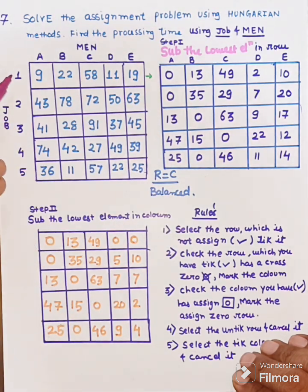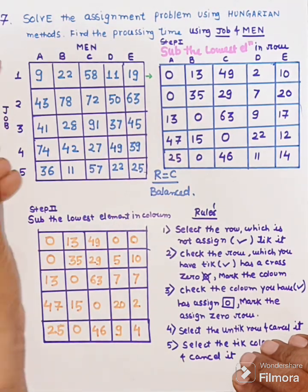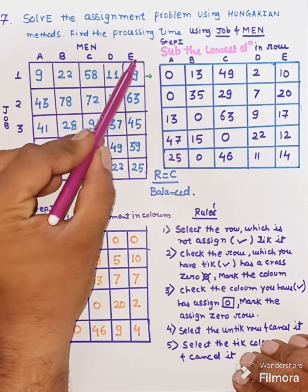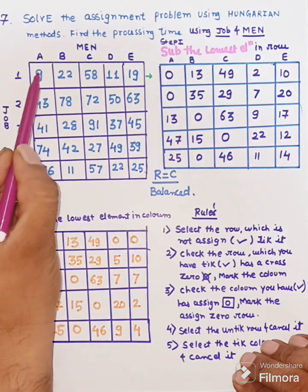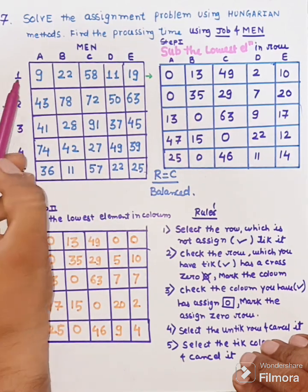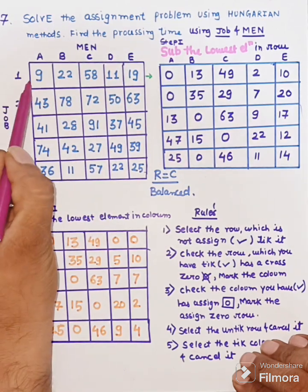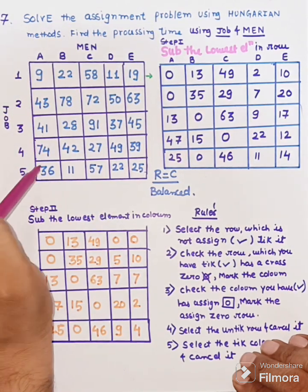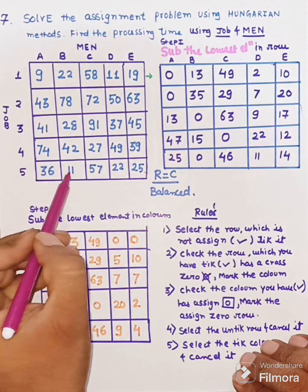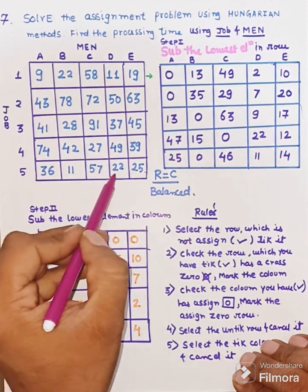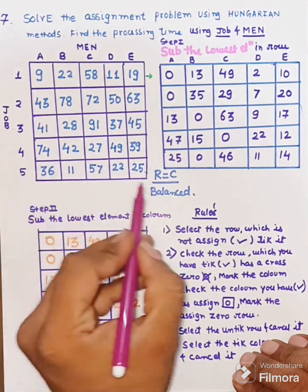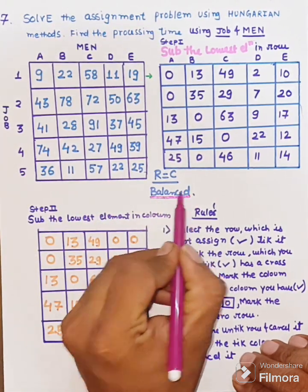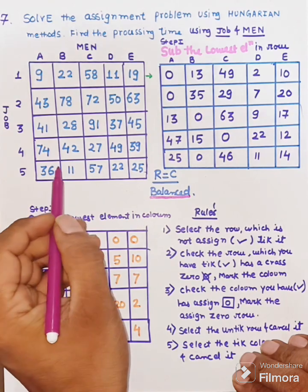So we have jobs 1, 2, 3, 4, 5 and men A, B, C, D, E. We have a matrix to check. Row is 1, 2, 3, 4, 5 and column is 1, 2, 3, 4, 5. So row is equal to column, which means this problem is a balanced problem.